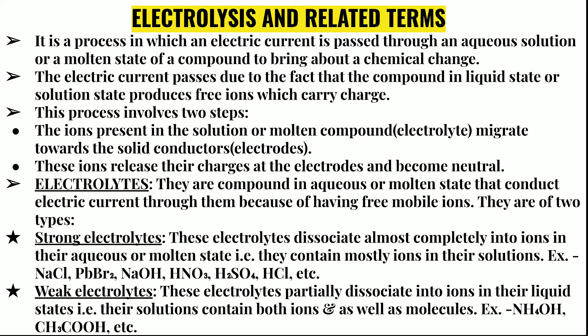Now I am going to discuss the electrolysis process and its related terms. What is electrolysis? It is a process in which an electric current is passed through an aqueous solution or a molten state of a compound to bring about a chemical change. The compound may be in aqueous solution or in a molten state, and a chemical change is formed after this electrolysis process.